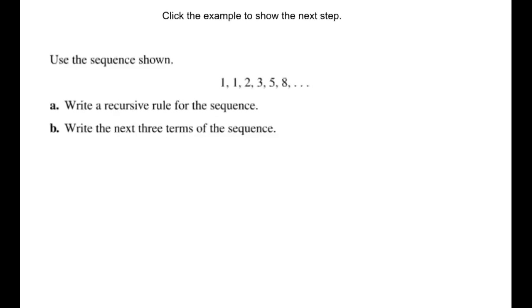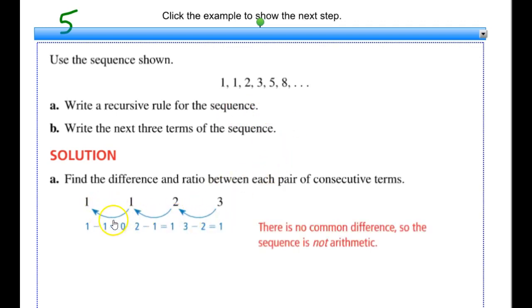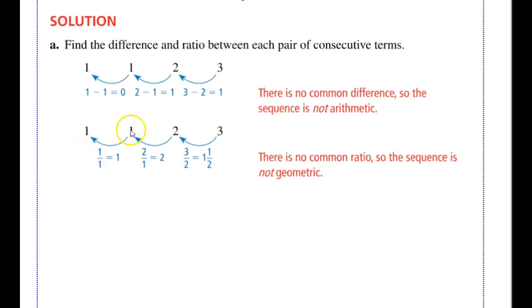Here are some monitoring progress problems — go ahead and try these. Example 5: use the shown sequence to write a recursive rule and find the next three terms. First I check differences: from 1 to 1 I add 0, from 1 to 2 I add 1 — these aren't the same, so it's not arithmetic. Then I check ratios: 1 times 1 is 1, but then I multiply by 2, then by 1.5 — not the same ratio either. So this is not geometric. It's a special type of sequence.